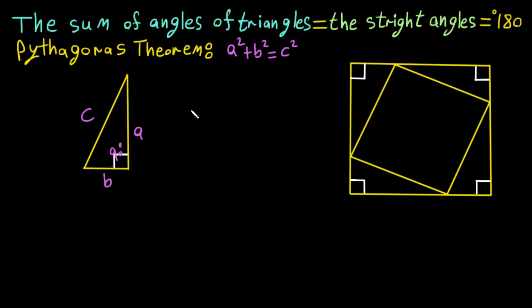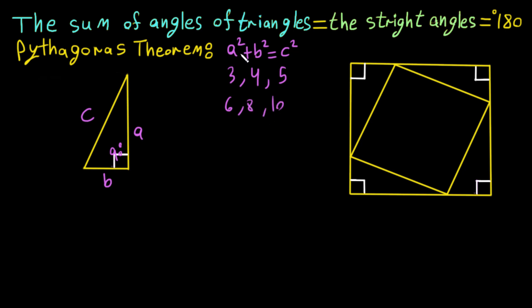Before we start, let's look at what numbers satisfy this equation. The most common example is 3, 4, 5: 3² = 9, 4² = 16, and 9 + 16 = 25, which is 5². The same works for 6, 8, 10: 36 + 64 = 100, and also for 5, 12, 13.